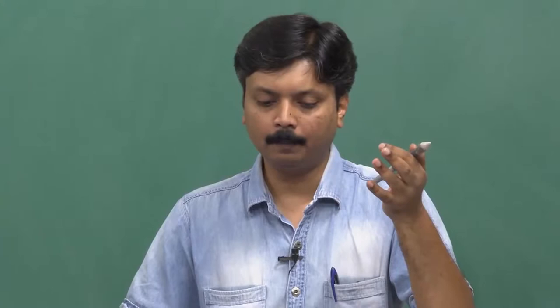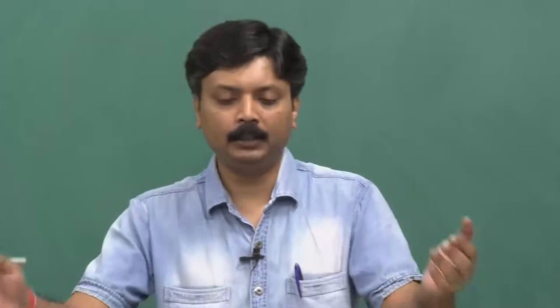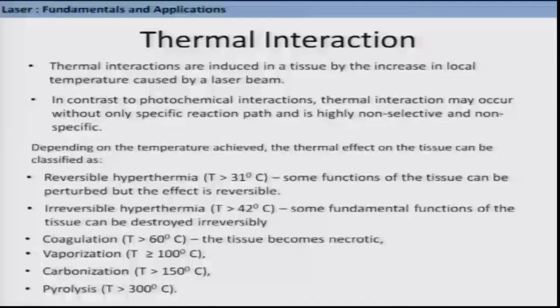Next we will move into another type of interaction: thermal interaction. Thermal interactions are induced in a tissue by the increase in local temperature — which is clear from the name itself — caused by the laser beam. In contrast to the photochemical interaction method, thermal interaction can occur without a specific reaction path and is highly non-selective and non-specific, which is a disadvantage. Depending on the temperature achieved, the thermal effect can be classified as reversible hyperthermia for temperatures greater than 37°C, where some tissue function can be perturbed but the effect is reversible.